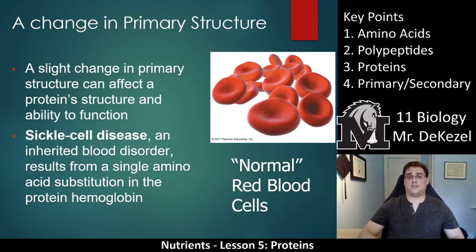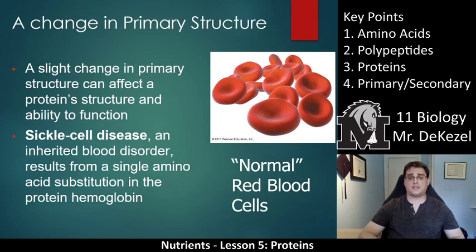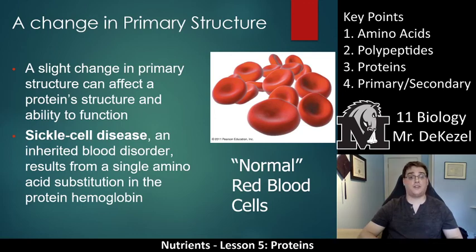Very small changes in the primary structure — the sequence of amino acids — can cause a very large problem with the protein. For example, sickle cell disease is an inherited blood disorder that results from a single amino acid — a single letter — being substituted in the protein hemoglobin. Hemoglobin transports oxygen in our blood, and this single change, this single typo, makes it impossible for it to do that. The cells become curved, unable to carry oxygen, and can get stuck in your blood vessels — it is very painful and uncomfortable.